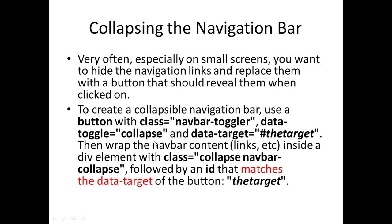For collapsing the navigation bar — very often, especially on small screens, you want to hide the navigation links and replace them with a button that reveals them when clicked. This is commonly seen on cell phones. To create a collapsible navbar, use a button with class navbar-toggler, data-toggle equals collapse, and data-target pointing to the target ID. Then wrap the navbar contents — links etc. — inside a div with class collapse navbar-collapse, followed by an ID that matches the data-target.